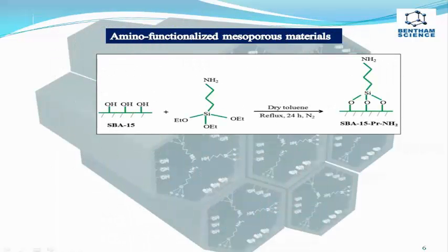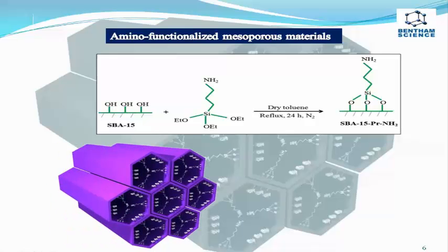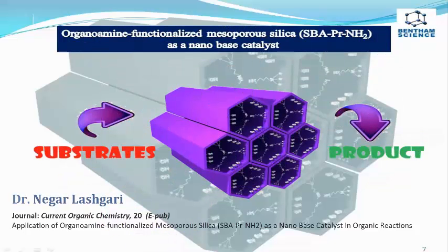Amino-functionalized mesoporous materials have recently attracted much attention among various organo-functionalized mesoporous silica materials due to their effective role in base-catalyzed reactions. The surface of SBA-15 can be modified by 3-aminopropylsilane, in which abundant hydroxyl groups of SBA-15 react with the organosilane to afford NH2 terminations. Amino-functionalized mesoporous silica has been found to be useful for base-catalyzed reactions.